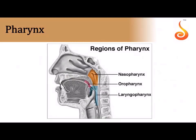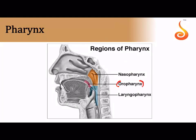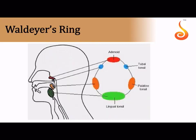Moving to the throat region: the pharynx is divided into three parts. The oropharynx communicates with the back of the mouth; the nasopharynx communicates with the nasal cavity; and the laryngopharynx communicates with the voice box (larynx). Tonsils at the back of the mouth are arranged in a pattern forming a hypothetical ring called Waldeyer's ring.